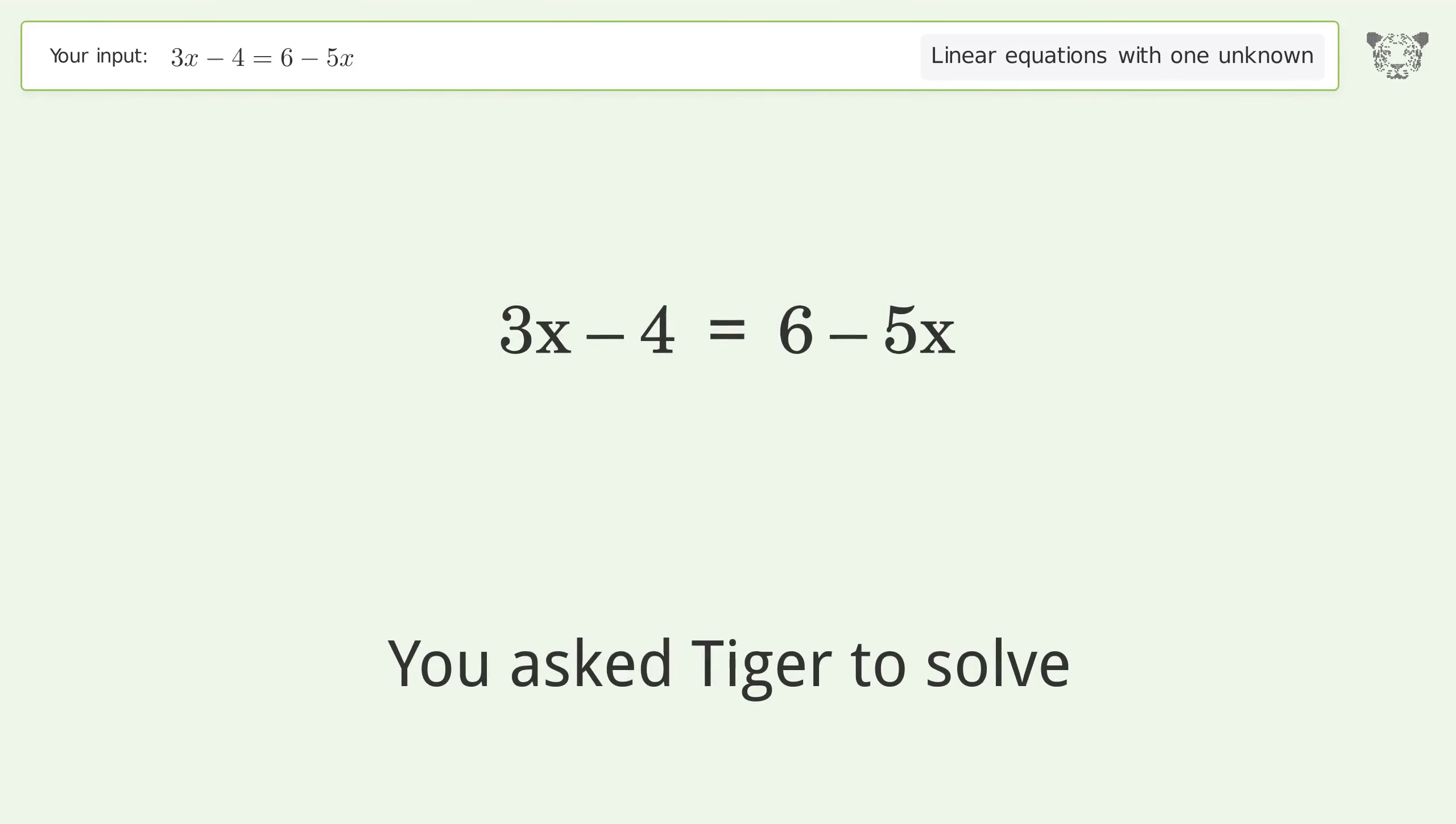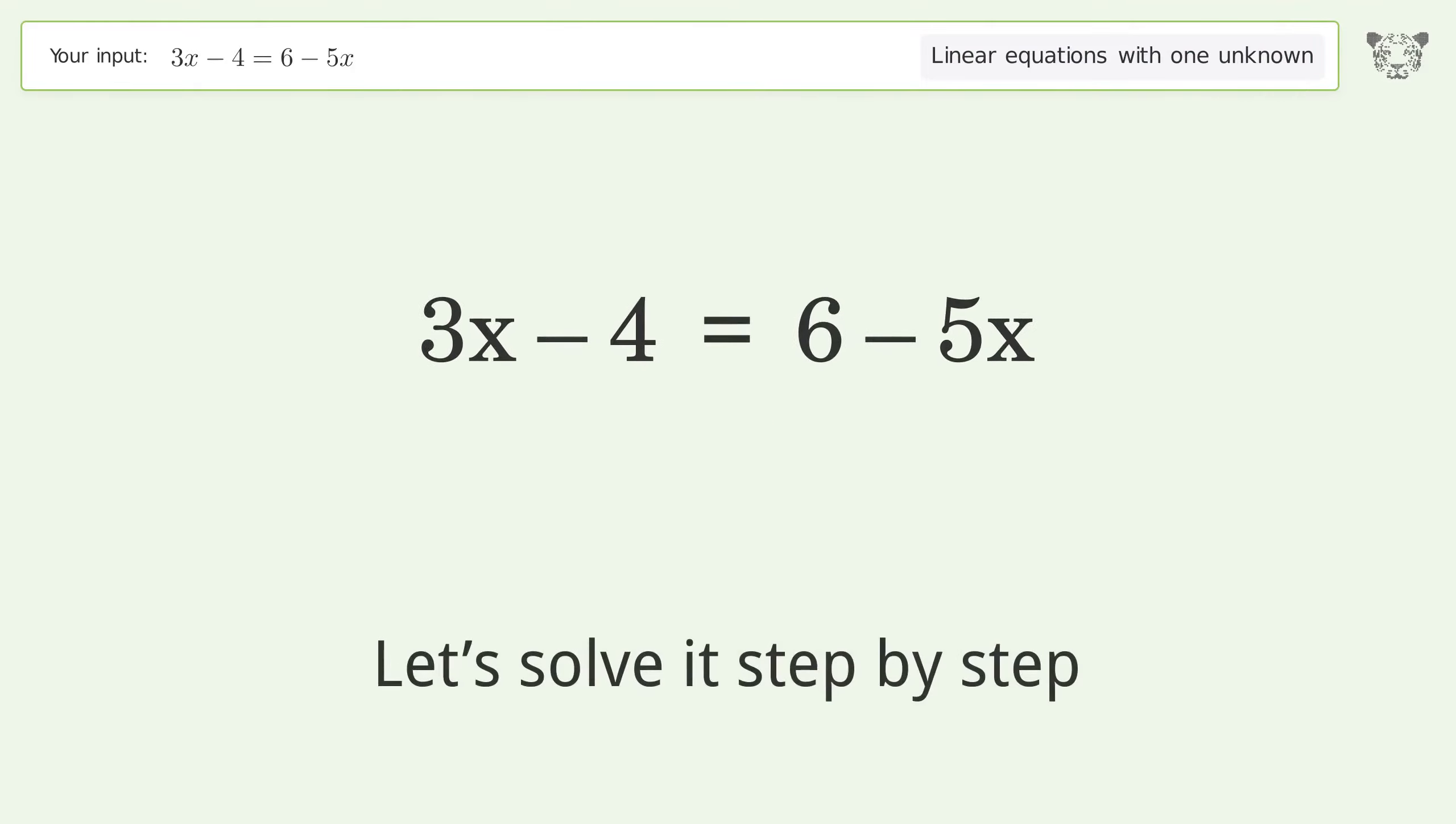You asked Tiger to solve. This deals with linear equations with one unknown. The final result is x equals 5 over 4. Let's solve it step by step.